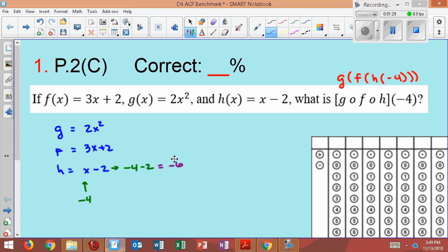So what do I do with negative 6? I take the negative 6, and I'm now going to insert it into the f equation at x's location. So this would give me 3 times negative 6 plus 2. That's negative 18, add 2, I get negative 16.